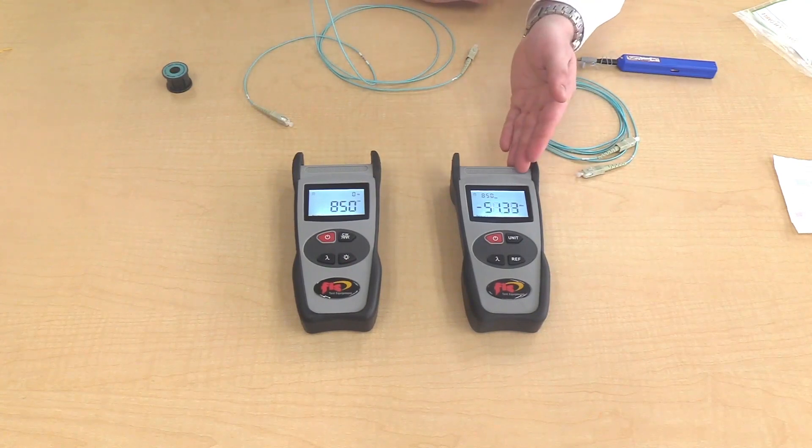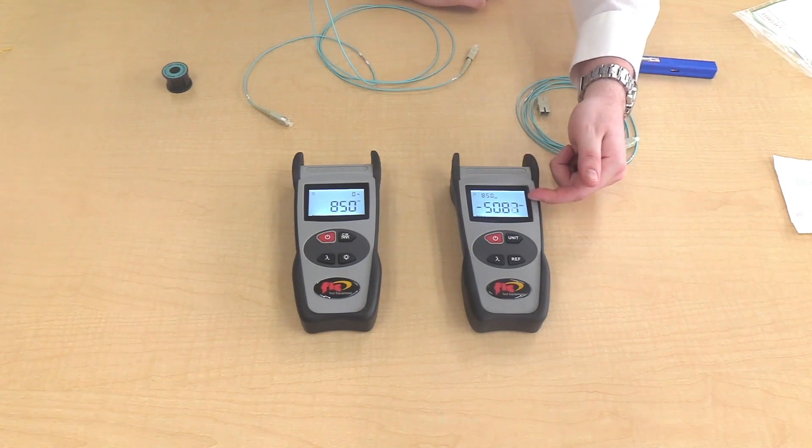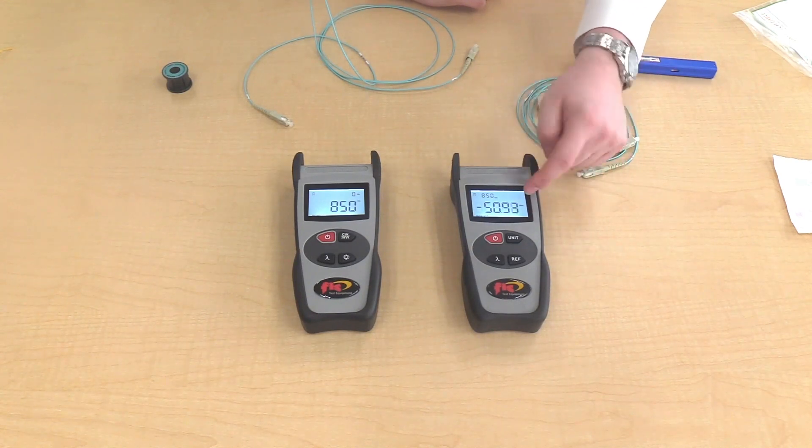On the power meter, when you turn it on, it will be on dBm to read absolute power. If you want to plug into a live signal, you can plug straight in and it will read your dBm value.